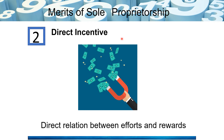Next is direct incentive. There is an absolute direct relationship between efforts and rewards. How much effort a sole proprietor puts into his business will be paid off by the rewards he gets — there is no lag between efforts and rewards. He is the person who will directly enjoy all the rewards of the business.